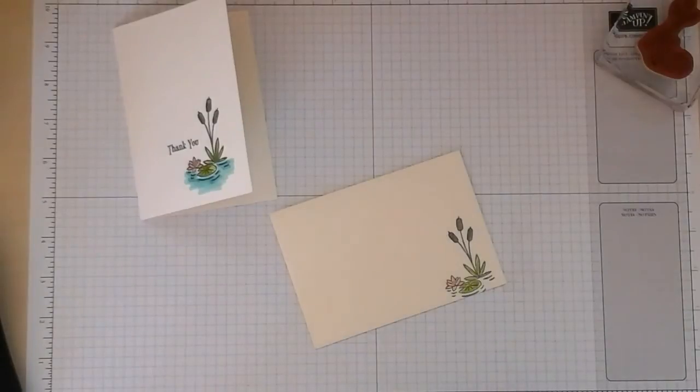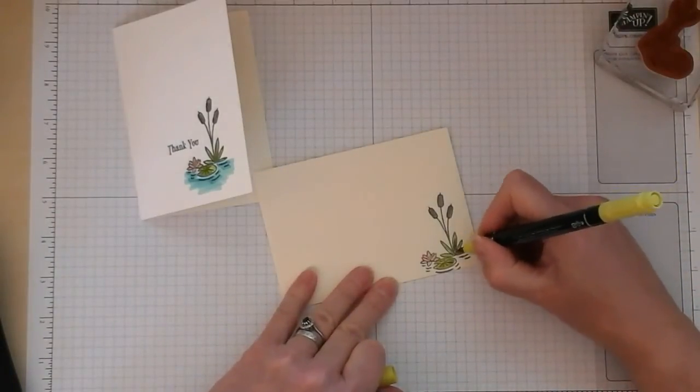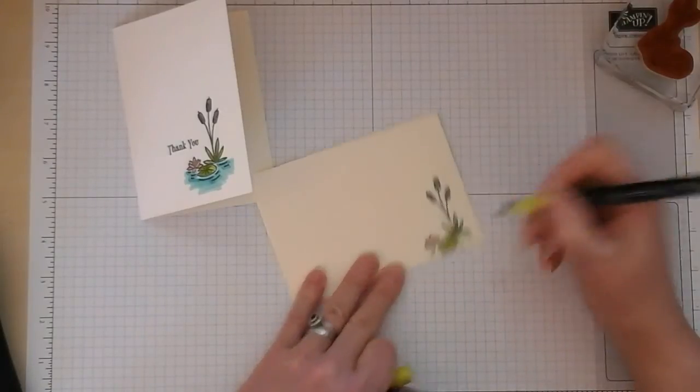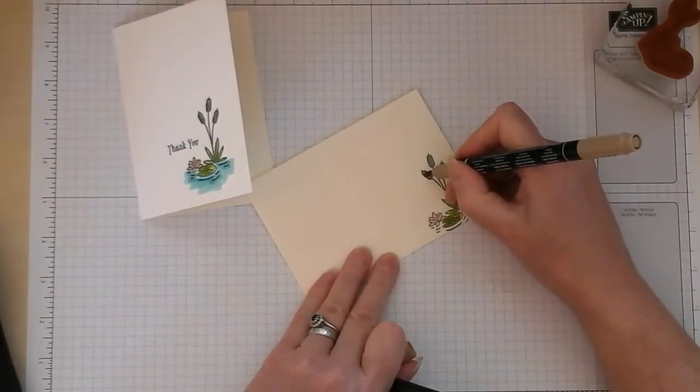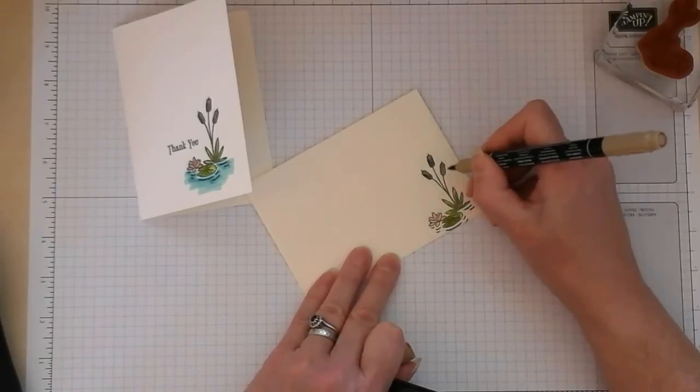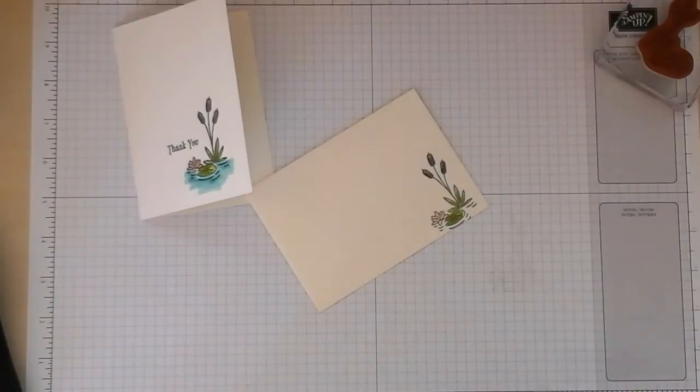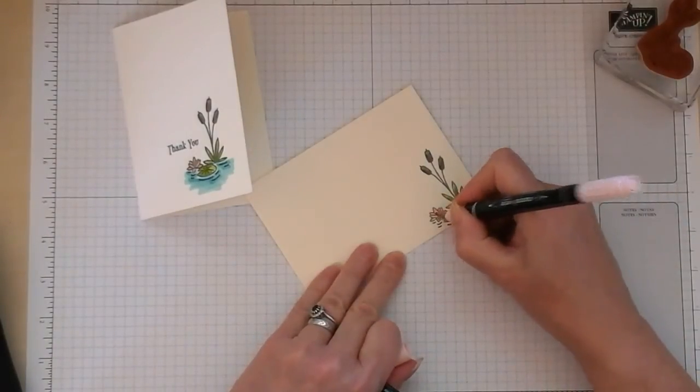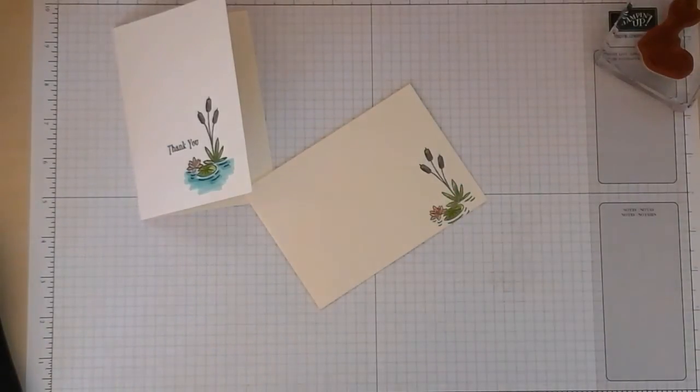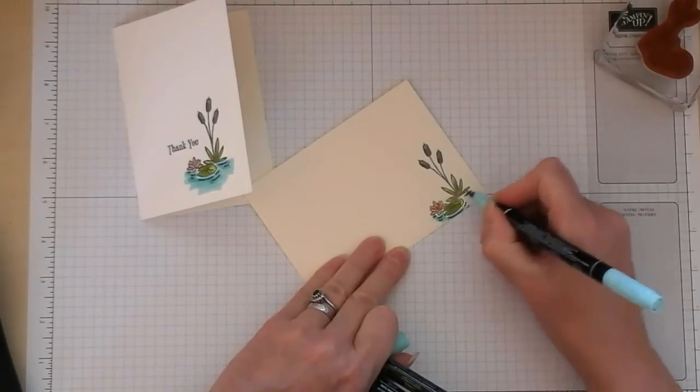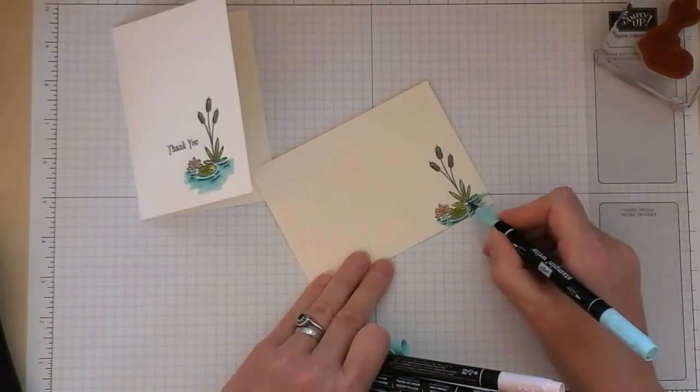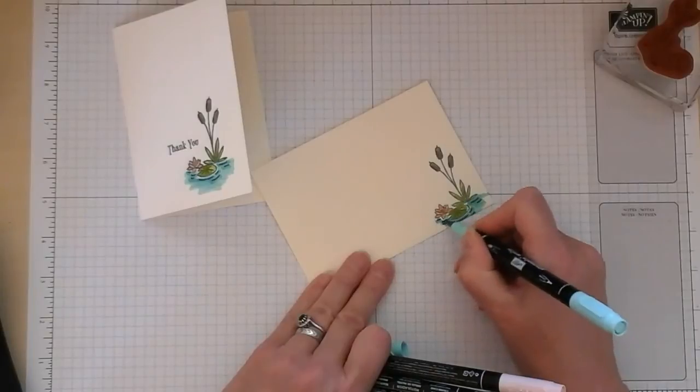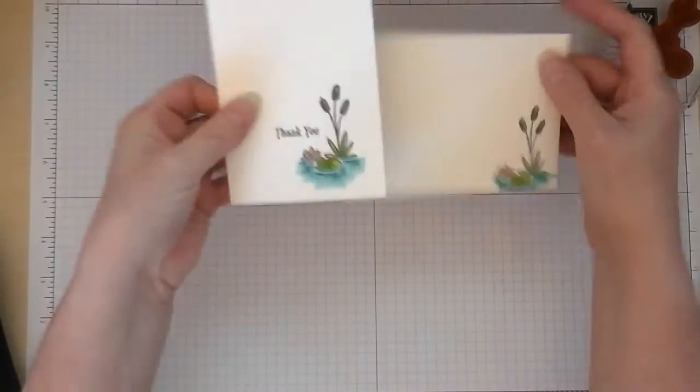So we'll just finish colouring that, go back in with the same colours in the same way I did on the front of the card. A little bit of lemon lime twist in the middle of that water lily, a little bit of pink and then finish off with the water. I'll give that a minute or two to dry and then just go over those lines. There it is, thank you card with the matching envelope.